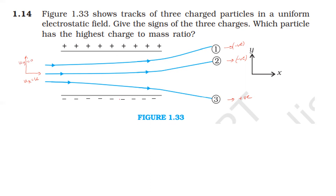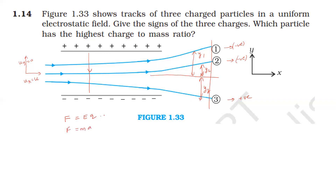These charges are deflected by some distances in the y-direction. The second charge is deflected by y₂, the first by y₁, and the third by y₃. We assume y₃ is greater than y₁ and y₂. The particles move under constant acceleration along the y-direction because the electric field acts from positive to negative plate. The force on each charge is F = qE, and by Newton's second law F = ma, so acceleration a = qE/m.